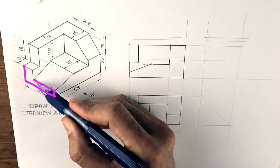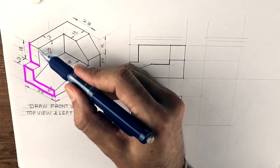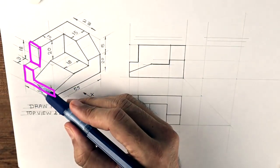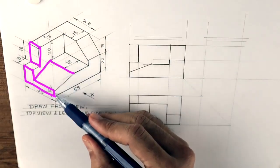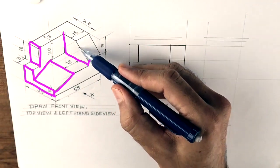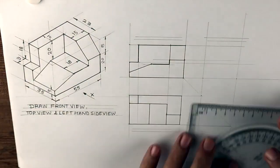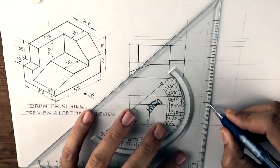Now in side view, we need to draw this L shape and that rectangle which is behind. This slope is also seen from side view and this behind portion. So we'll draw one by one. First, we'll draw that L shape. We'll take projection from front view as well as top view.